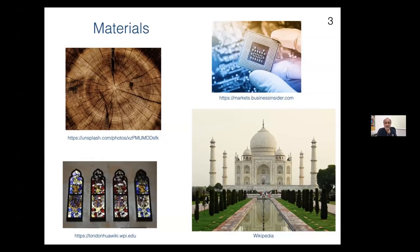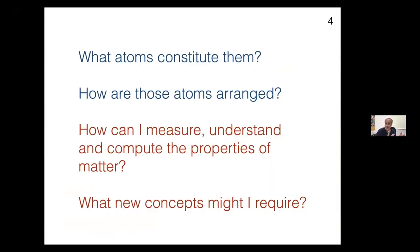When we think about materials, this is the diversity that we see around us. We can see tree trunks, stained glass, the silicon chip on the top, marble below. The questions we might ask about materials are all very generic: what are the atoms that constitute them, and how are these atoms arranged? As a scientist, how can I measure, understand, and compute the properties of matter?